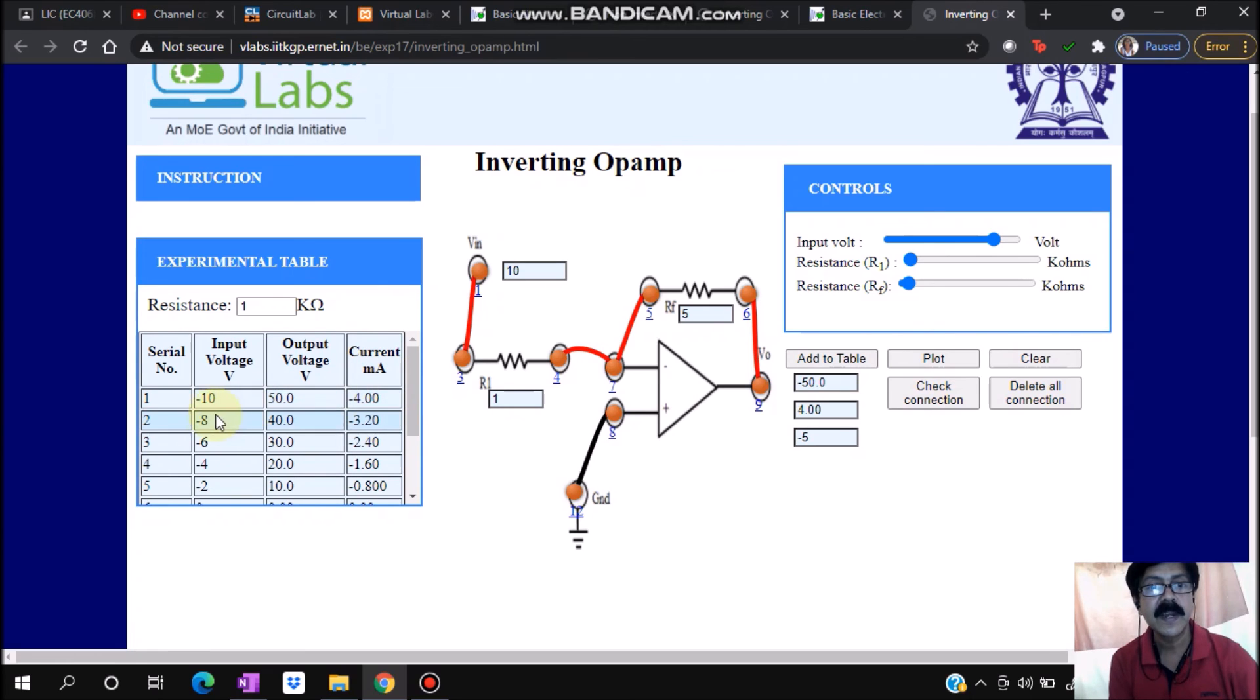In this way I'm getting the table showing that for an input voltage of minus 10 millivolts, I'm getting 50 millivolts as output. Just remember this is in millivolts because 50 volts is not possible.